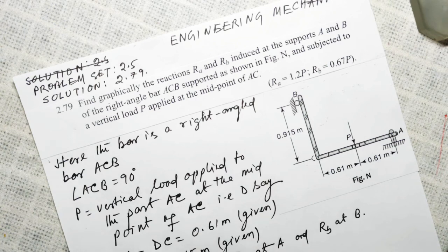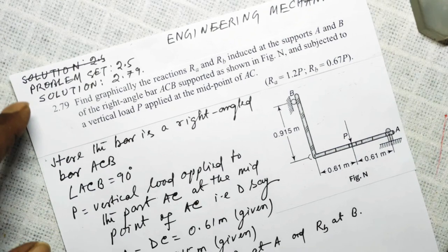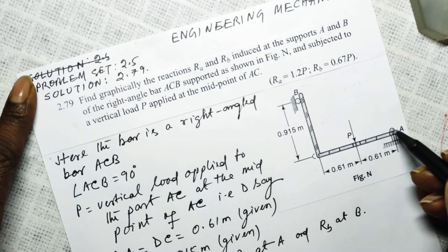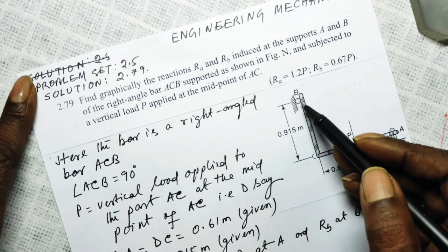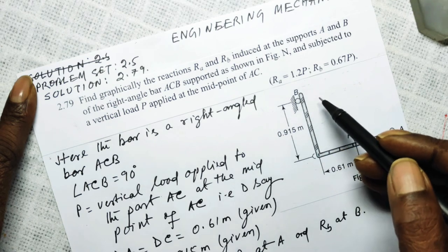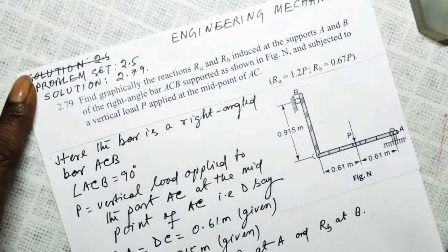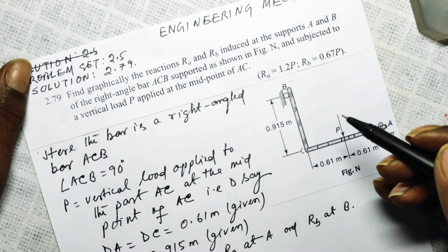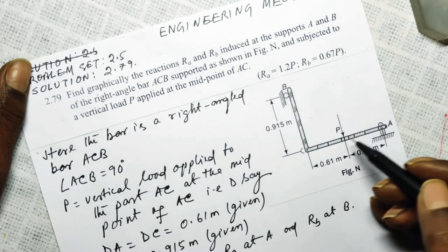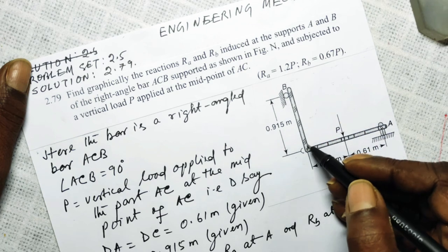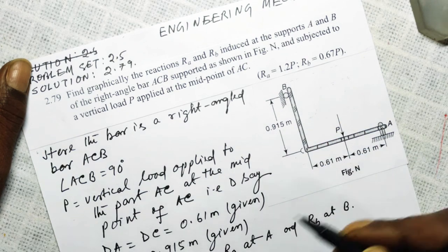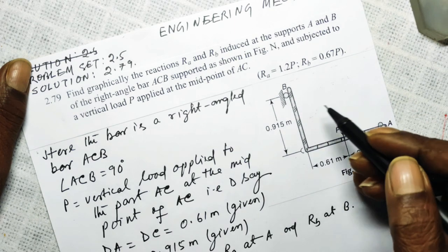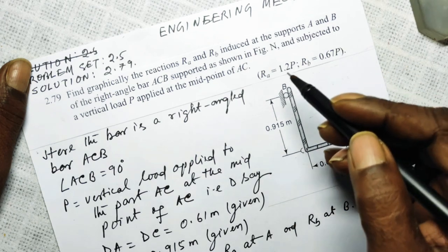Let us discuss this problem: find graphically the reactions R_A and R_B. Point A and point B are the two supports for a right-angled bar ACB — this is a right-angled bar with a 90-degree angle at C — supported at A and supported at B.